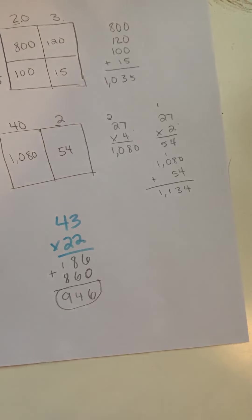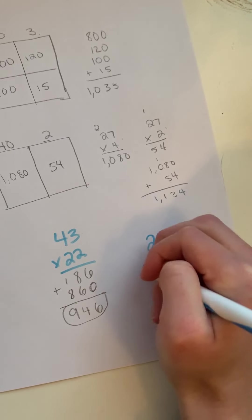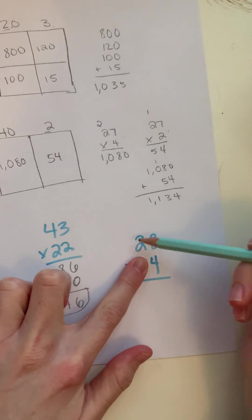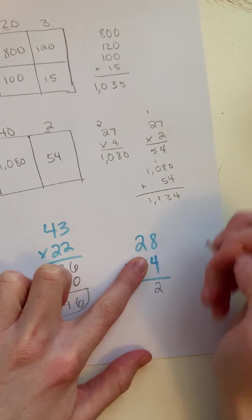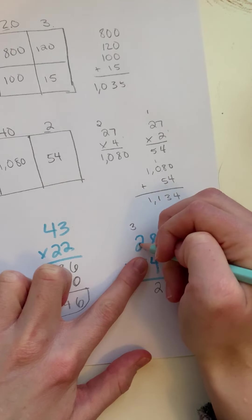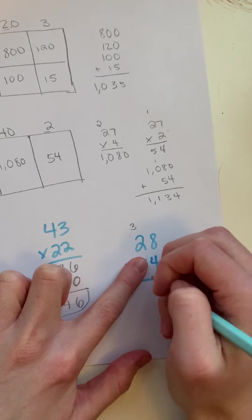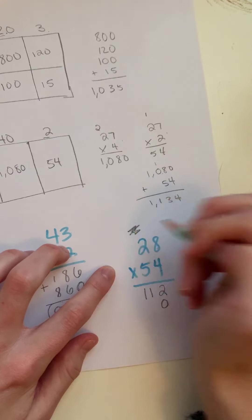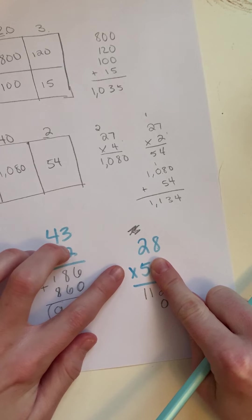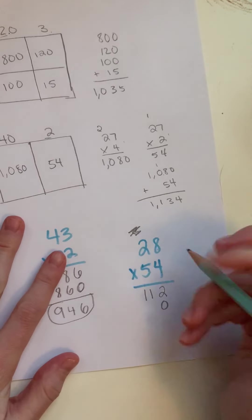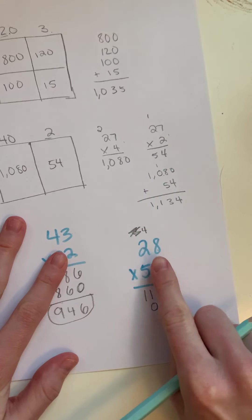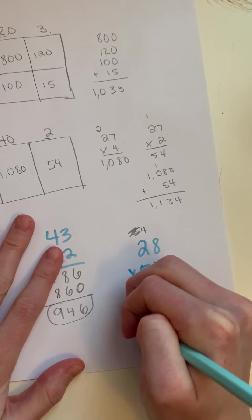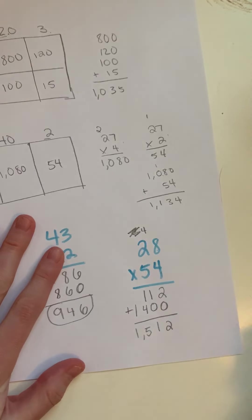I'm going to show you this method again with another problem. 28 times 54. Paying attention just to the 28 times 4 first. 8 times 4 is 32. I'm going to carry over my 3. 4 times 2 is 8. 8 plus 3 more is 11. Now I'm moving over to the tens place. So I'm going to put a 0 here. And I'm going to cross this off because I don't need to use that number anymore. Then I'm going to pay attention to 28 times 5. 5 times 8 is 40. Put my 0 here. Carry my 4 over. 5 times 2 is 10. Plus 4 more is 14. Add 1,512.